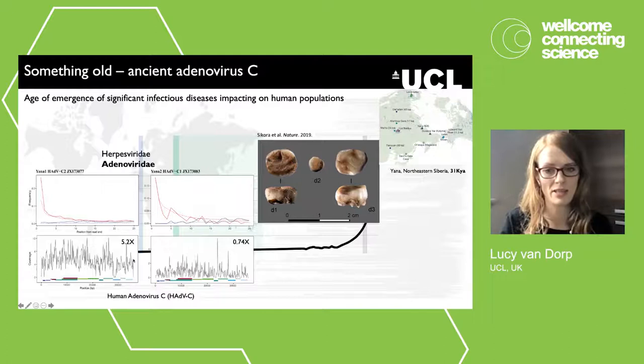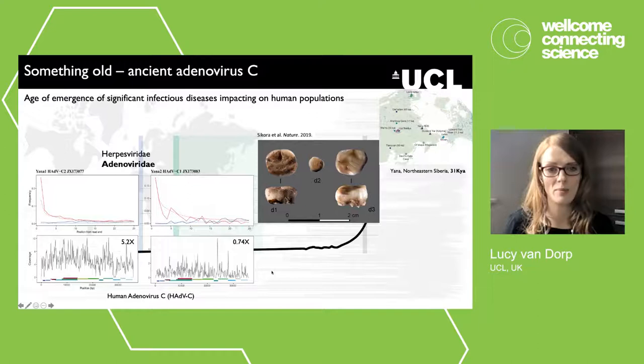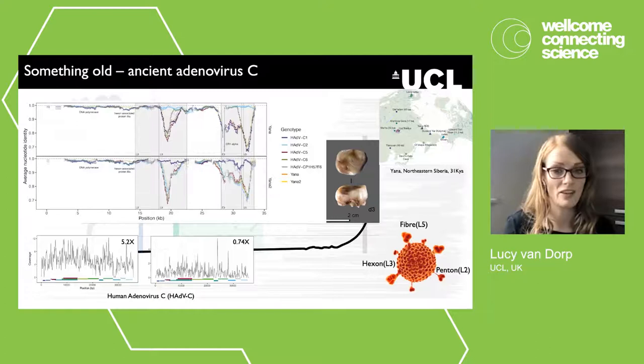One of these adenovirus C genomes had quite good coverage at about 5.2x over the reference genome, and the other was just over 1x. The coverage was fairly even, and we could validate that these genomes were genuinely ancient. We could strongly assign these genomes to adenovirus C rather than any other adenovirus species. These genomes provide direct evidence of the presence of these viruses in human populations at least since the Pleistocene, offering some of the earliest direct evidence of human-virus interactions.